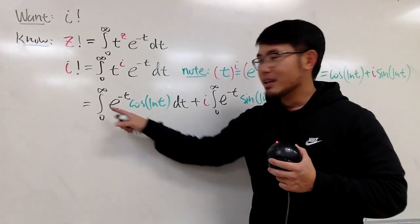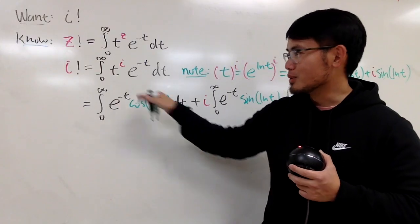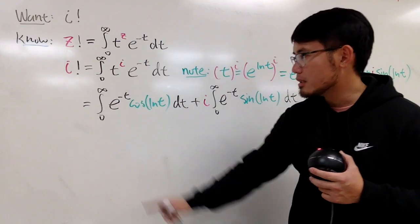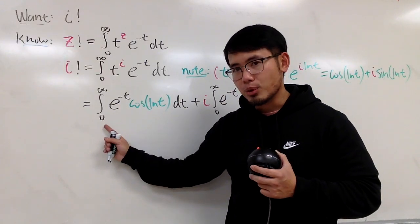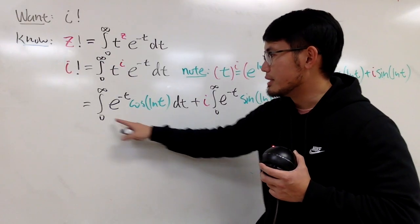So, I just want to tell you guys that this right here, it converges when you have t goes to infinity. But, what happens if t is approaching 0? Take a look right here. If you put 0, technically 0 plus, because we have ln t.